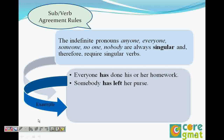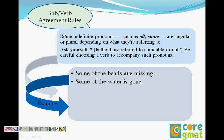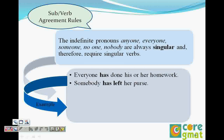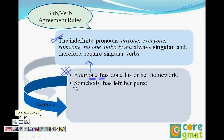As we said in the previous video, any word that ends with 'one,' 'body,' or 'thing' is always singular — we spoke about that in pronouns. So anyone, everyone, no one, nobody — they're always singular and always require a singular verb. For example: 'Everyone has done his or her homework.' Everyone is singular, therefore 'has.' 'Somebody has left her purse' — somebody is singular, has is singular. We'll talk about 'all' and 'none' in the next video.